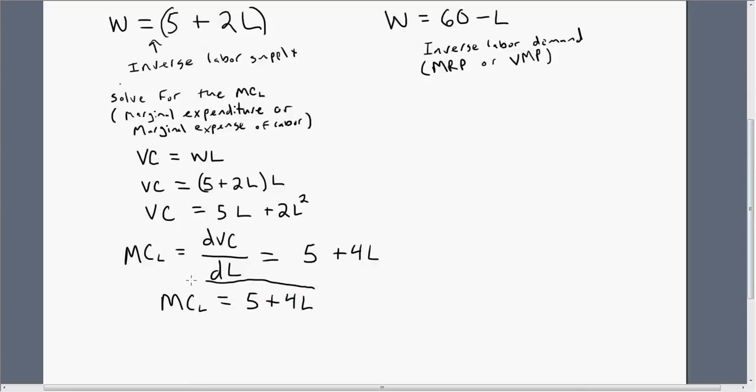One little hint here is that the marginal cost of labor function is going to look almost exactly like your inverse labor supply function. Notice that this is 5 plus 4L, and our inverse labor supply function was 5 plus 2L. The only difference is that the marginal cost of labor has a slope that is twice as steep. So given that this is 2, this is going to be 4.